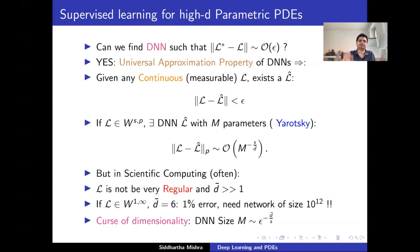For example, even if the function is Lipschitz continuous and the dimension is only six — a toy problem — to get 1% error you already need a network of size on the order of a trillion. You cannot afford to train such neural networks. This is because of the curse of dimensionality: the size of your neural network to obtain a certain accuracy scales exponentially with respect to dimension. That's a killer — it doesn't allow proper approximation.